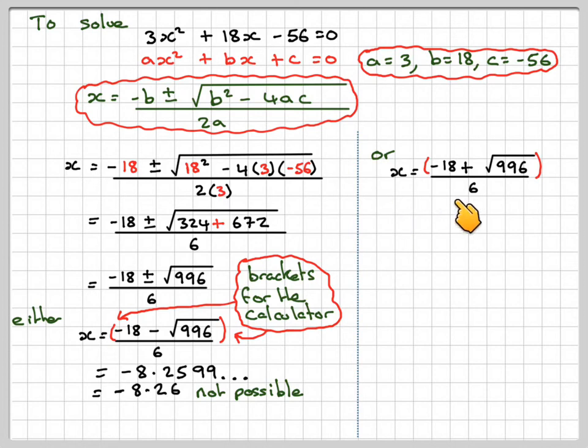Or x = (-18 + √996) / 6. That gives me 2.2599, which gives me 2.26 centimeters to 2 decimal places.